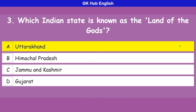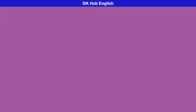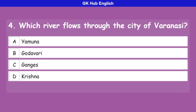Question 4: Which river flows through the city of Varanasi? Option A is Yamuna, option B is Godavari, option C is Ganges, option D is Krishna. Correct answer is Ganges.